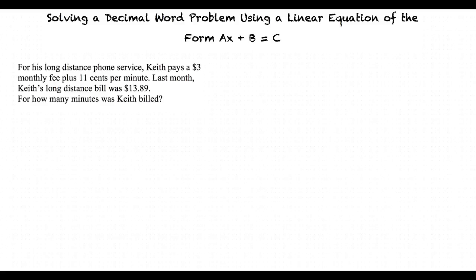So what's our first step? In this problem, the monthly fee increases at a constant rate, 11 cents per minute. So we can model this with a linear equation in the form Ax plus B equals C.